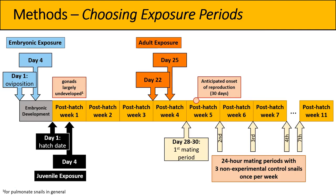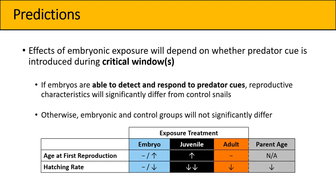Once all snails had reached the fifth week post-hatch, they received a mating opportunity once per week for a 24-hour period, mated with three non-experimental control snails. For predictions, one caveat: the effects of the embryonic exposure group will depend heavily on whether the predator cue is actually introduced during a period when embryos can detect and respond to it.